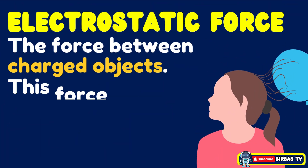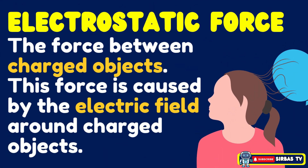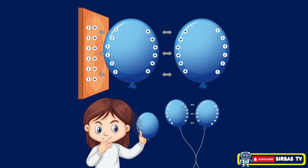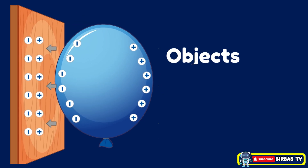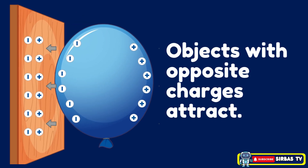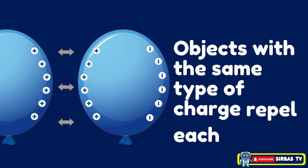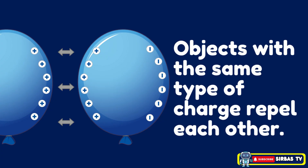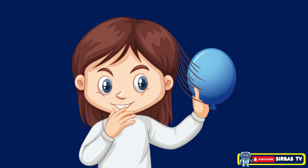Electrostatic force is the force between charged objects. This force is caused by the electric field around charged objects and it can attract or repel without direct contact. Objects with opposite charges attract, while objects with the same type of charge repel each other. For example, a girl's hair is attracted to a balloon because they have opposite charges.